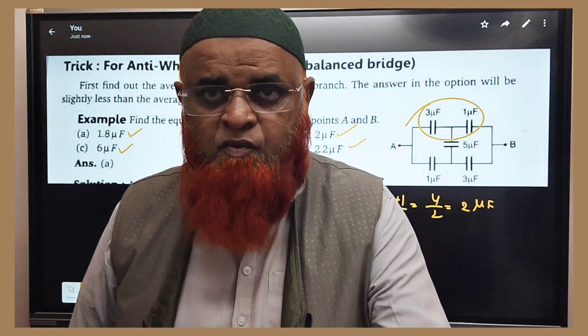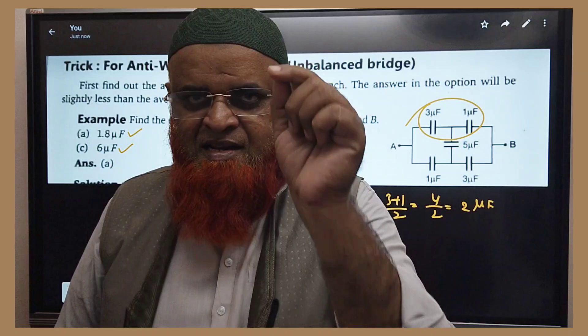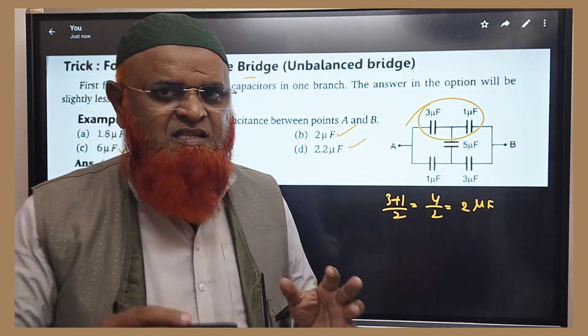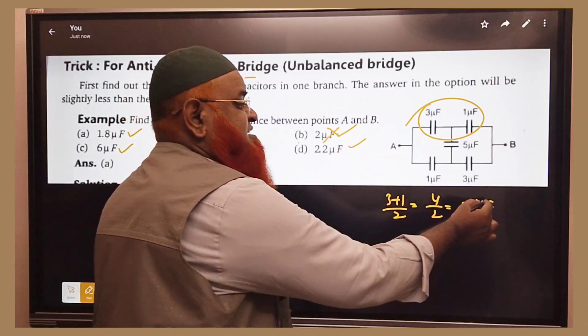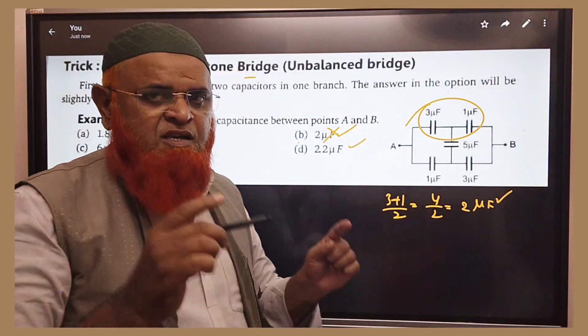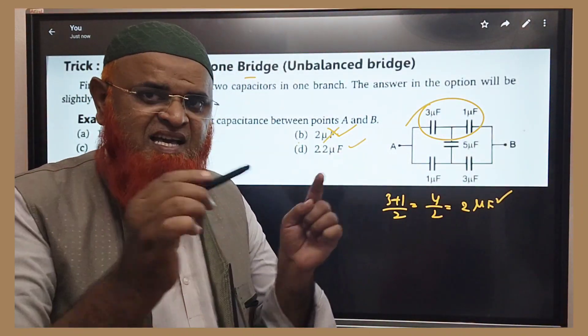You have to select an option which is less than 2. That's it. That is our shortcut here. So your answer will not be 2 microfarads as you are getting 2 microfarads. Your answer should be less than that.